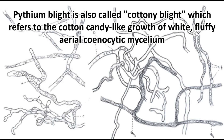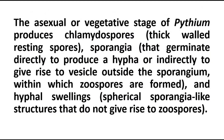Asexual reproduction in Pythium occurs by chlamydospores and also sporangia. Sporangia may directly germinate and cause reproduction. Sometimes sporangia may in turn produce zoospores, and these zoospores will spread the disease and spread the fungus in terms of reproduction. These zoospores and chlamydospores will help in asexual reproduction.